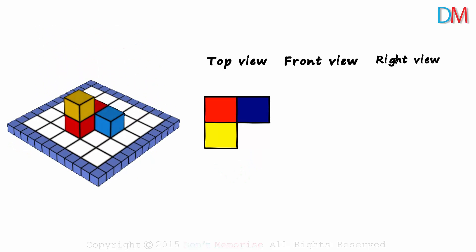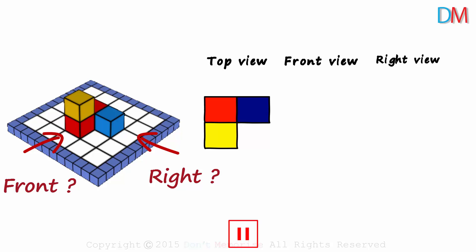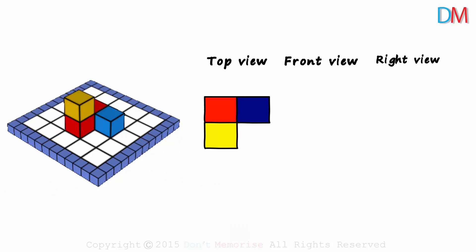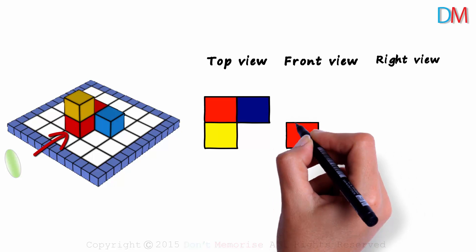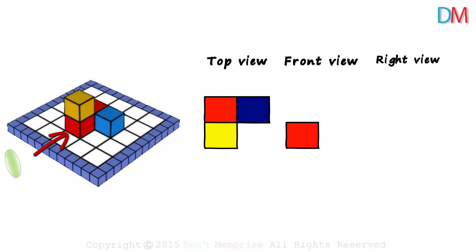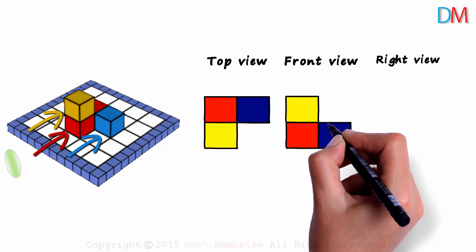Now let's get back to the original view. I want you to try drawing the view from the front and the view from the right. Let's draw the front view first. The front view is the view from here. At the bottom, we have the front face of this red cube, so we draw a red square here. Now from the front view, what will we see on top of the red cube? It will be the front face of the yellow cube, so we draw a yellow square on top of the red one. And at the bottom, next to the front face of the red cube, we will see the front face of the blue cube. We draw a blue square here, and that completes our front view.